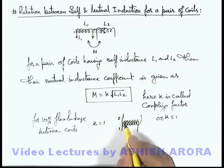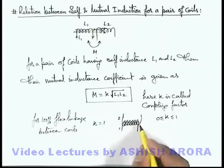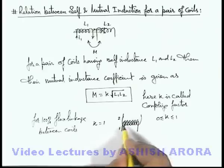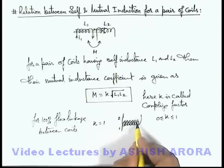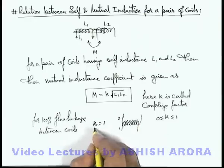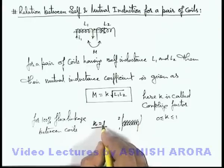If one coil is wound over the other one, then we can say that whatever flux is flowing through, whatever flux exists within coil one will be completely linked or passing through the coil two. This is the only case when we can say that the value of k will be equal to one in practical situations.